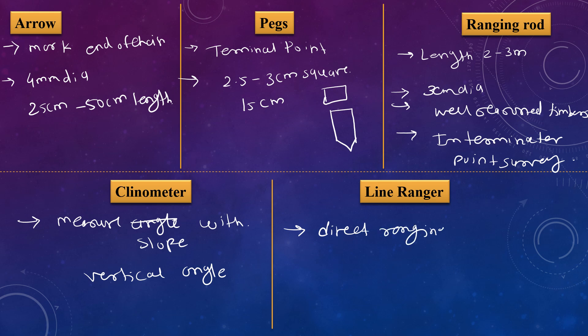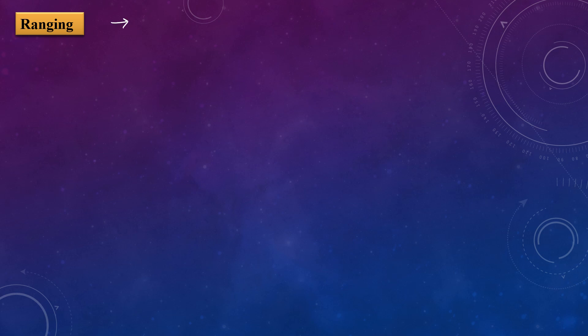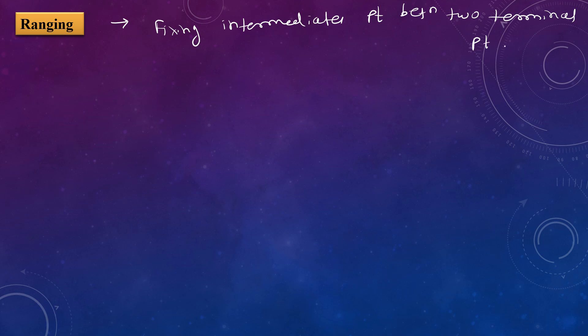Ranging is the process of establishing or fixing intermediate points between two terminal points. Ranging is of two types: first is direct ranging, and second is indirect ranging.